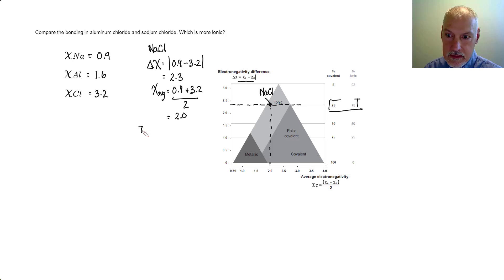We'll do the same thing now with our aluminum chloride. First of all, the difference in electronegativity of the two substances, 1.6 and 3.2. Again, the absolute value gives me 1.6. So that puts me somewhere on this line.